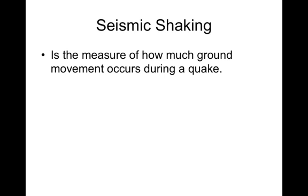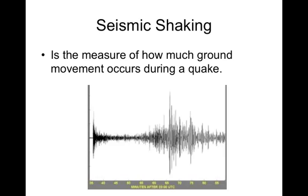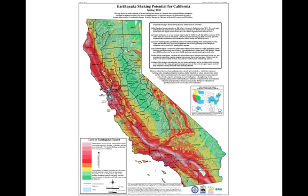Seismic shaking is the measure of how much ground movement occurs during an earthquake. We've seen this when we talked about earthquakes — here's a seismogram showing shaking. If we look at California and where the potential for shaking is, the biggest potential is right along the San Andreas Fault, no surprise there. As we move inland it decreases, but right down here at Long Beach, we are in the high shaking range and can expect to get earthquakes often.